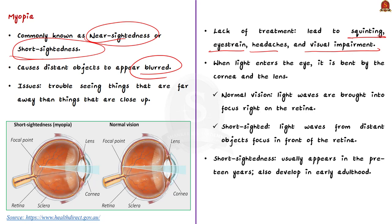How can we treat myopia? The most common treatment is prescription glasses. Contact lenses are also available, as well as laser surgery. These are the common treatment methods of myopia.